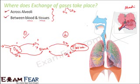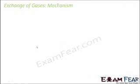We will now look at the mechanism behind the exchange of gases. Why does oxygen move from alveoli to blood vessels? Why does carbon dioxide move from blood vessels to alveoli? Similarly, why does oxygen move from blood vessels to tissues, and why does carbon dioxide move from tissues to blood vessels? We will try to understand what helps oxygen or carbon dioxide move from one region to another.